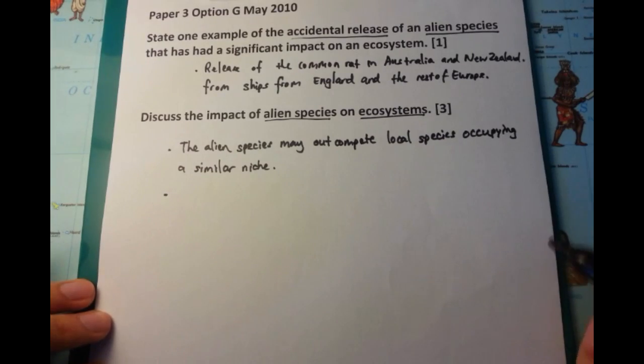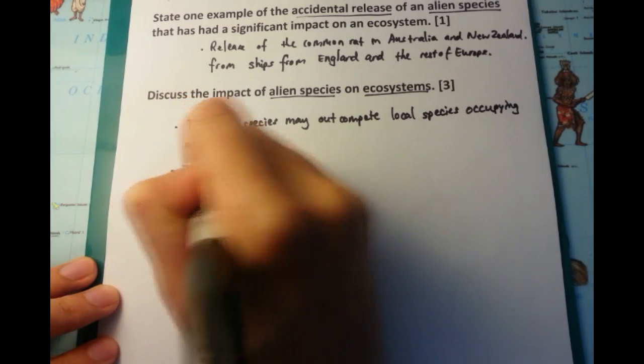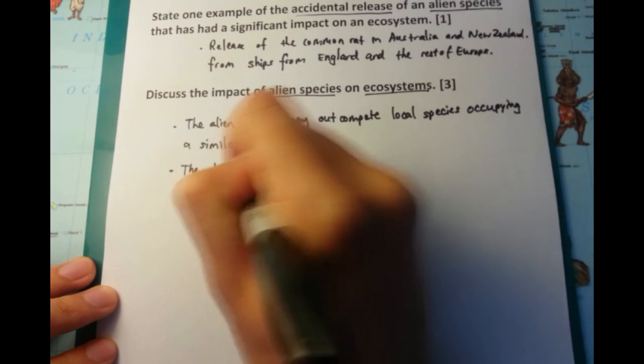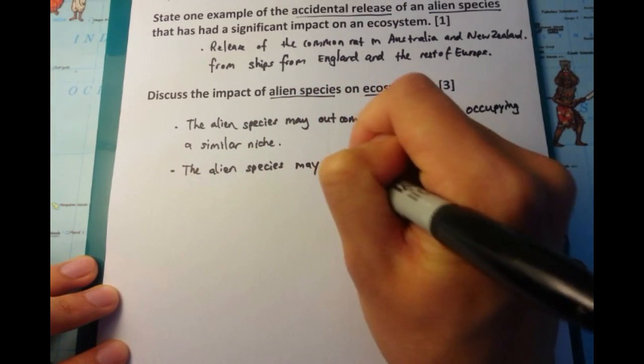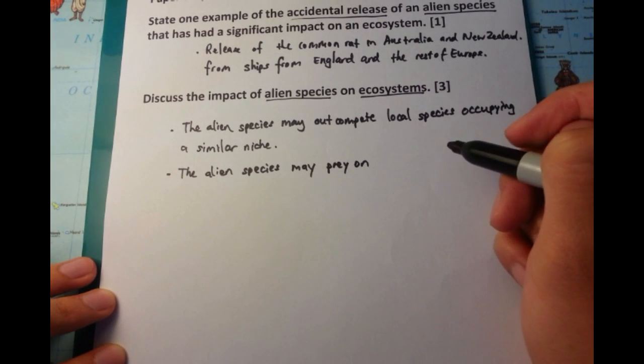So bilby, for those of you who are not sure, are little creatures that look a bit like rabbits, but are native to Australia. And rats, they would compete with these bilbys because they're similar in size, they live in similar habitats, etc.